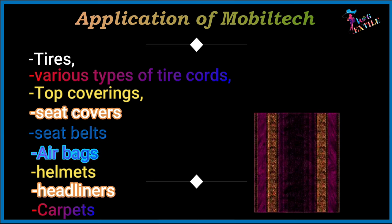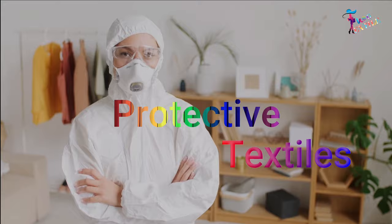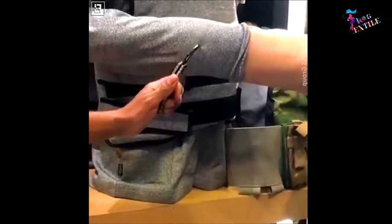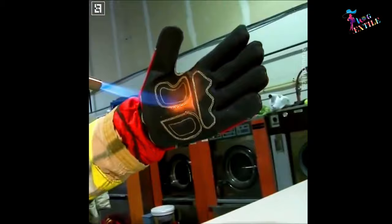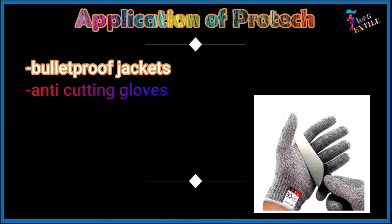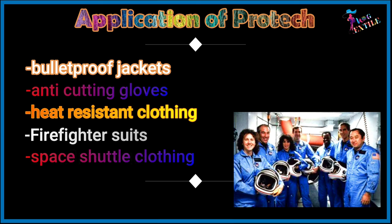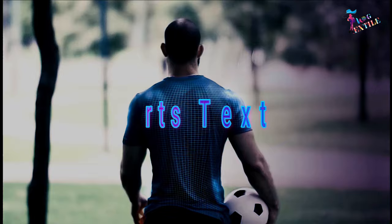Headliners and carpets are all examples of automobile upholstery. Protective textile is one of the best technical textiles, providing excellent protective functionalities including chemical protection, heat protection, and cold protection. It has been used to defend against a variety of natural and man-made hazards. Applications of protech include bulletproof jackets, anti-cutting gloves, heat-resistant clothing, and firefighter suits.